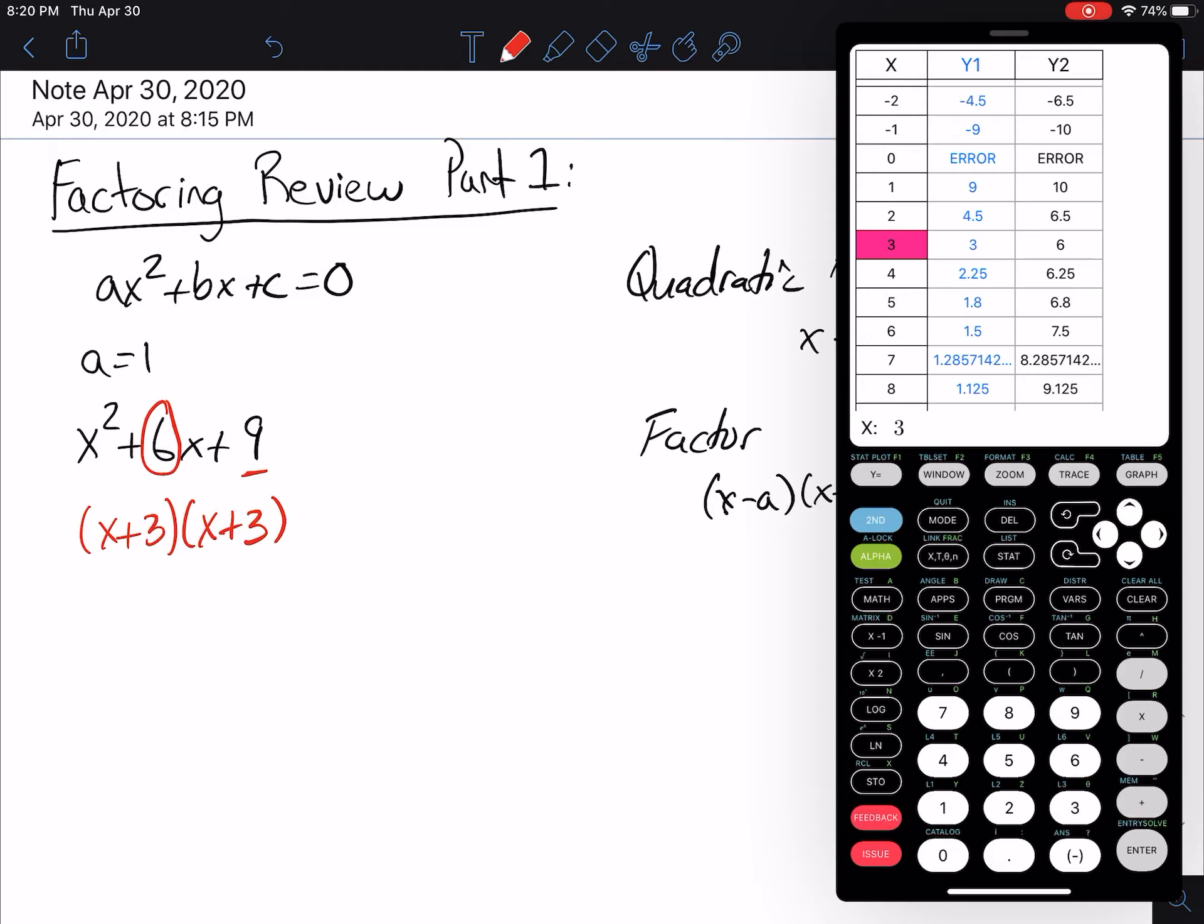That is the factored answer. If they were asking us to solve, we would set it equal to 0, and we would solve each answer so that we get x equals negative 3, x equals negative 3. But they're only asking us to factor here.